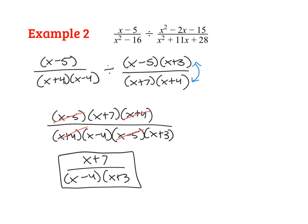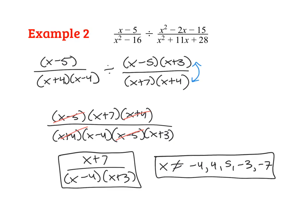Our job is to find common factors to cancel out. We have a common factor of X minus 5 and a common factor of X plus 4, leaving us with our final answer. Of course, we need to list our restrictions. Going across the denominator, X cannot equal negative 4, positive 4, positive 5, negative 3. And to be extra thorough, X cannot equal negative 7 either. So these are all of our restrictions.